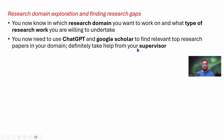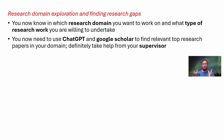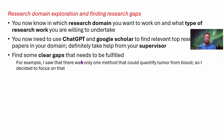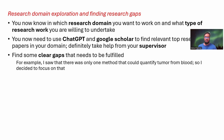You definitely need to take help from your supervisor when identifying top research papers in your domain. Domain is a big thing — natural language processing is a domain, bioinformatics is a domain. Your supervisor will help you narrow down the papers you need to look at. After looking at those papers — maybe 30, 40, or 50 papers — you don't need to read them in detail. Just go through their introduction section, read it thoroughly, and see whether there is any clear gap.